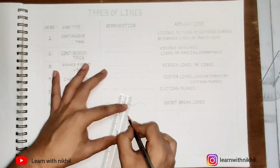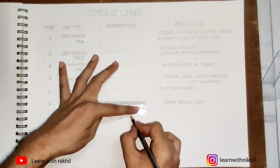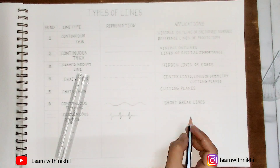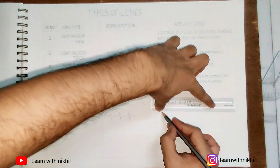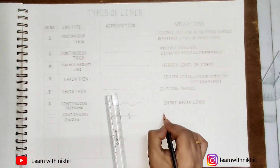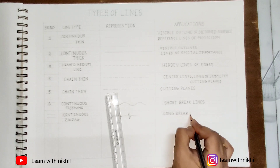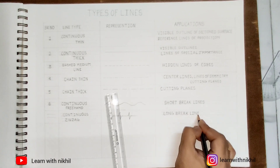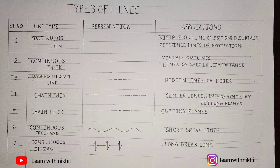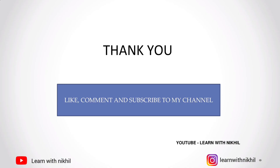The seventh one is the continuous zigzag line. Here you should keep in mind that the distance and height should be consistent. This type is used for long break lines where you have a long distance. Thank you everyone — subscribe and like my channel, see you in the next video.